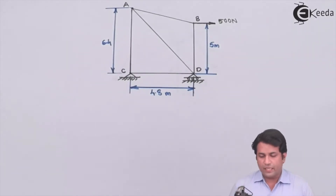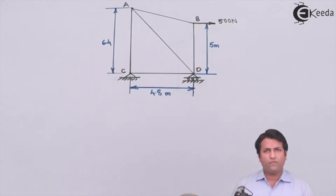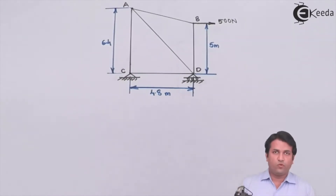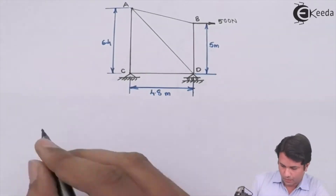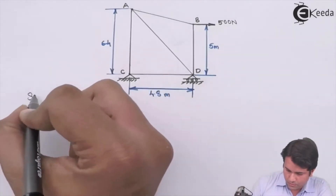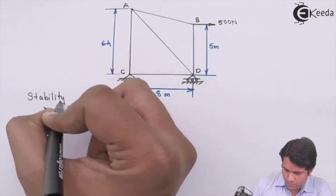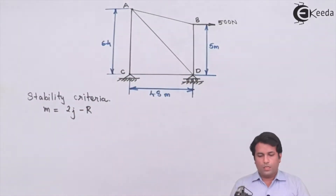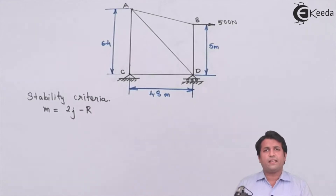The first thing in this case is to find out the stability criteria. We have to check whether the truss is stable or not. If the truss is stable then only we move ahead, otherwise we stop there.